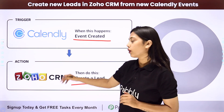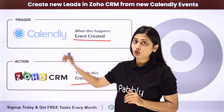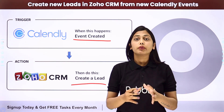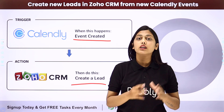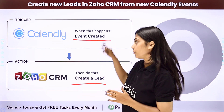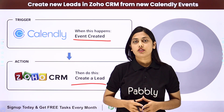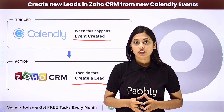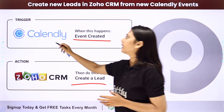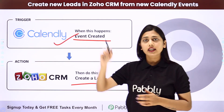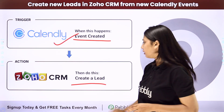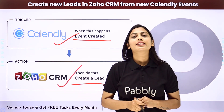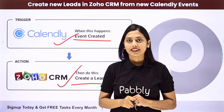But this cannot happen on its own because both of these applications do not have a direct connection between them. But what if I tell you we can automate this process with the help of Pabbly Connect? We will learn to create such an integration where our trigger will be an event created in Calendly and our action will be a lead created in Zoho CRM. Let us learn how to do it.